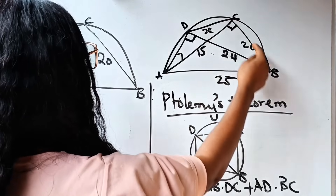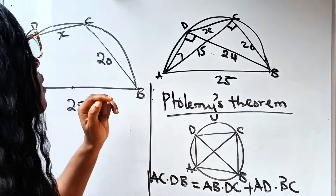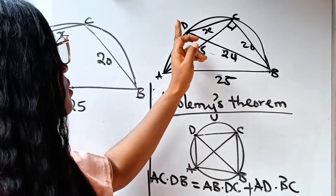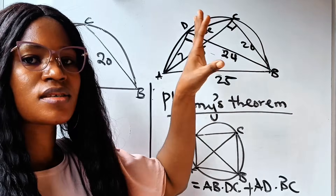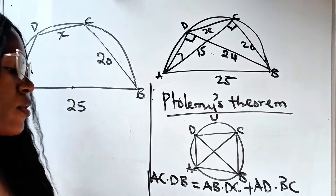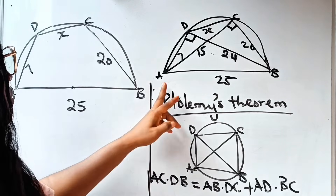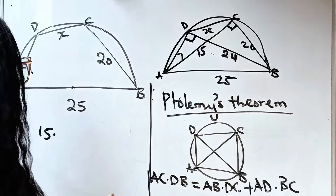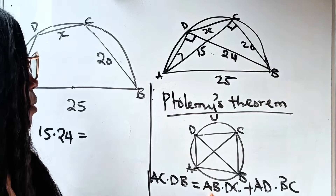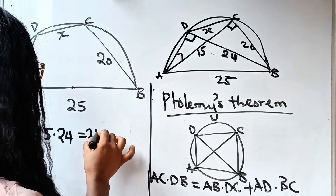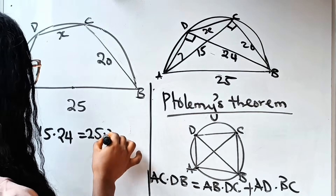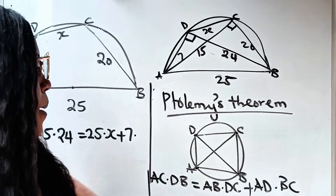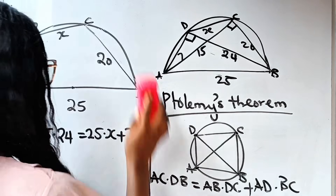This quadrilateral ABCD has all its vertices on the circumference of the circle, so Ptolemy's theorem applies. Substituting: AC = 15, DB = 24, AB = 25, DC = x, AD = 7, BC = 20. So: 15 × 24 = 25 × x + 7 × 20.